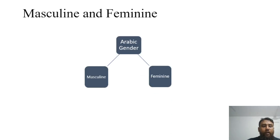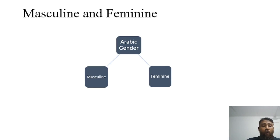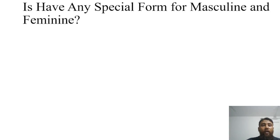Arabic has two genders: masculine and feminine. There is a clear difference between masculine and feminine in Arabic. The terminology used for gender is al-jins, which translates to sex, race, or kind. Generally speaking, a noun is either masculine, feminine, or of an uncertain gender — sometimes masculine, sometimes feminine.